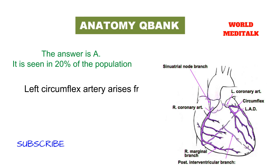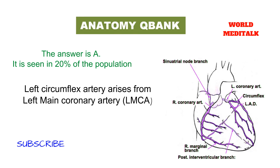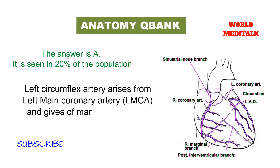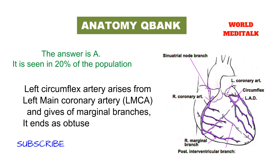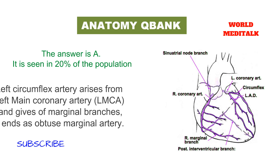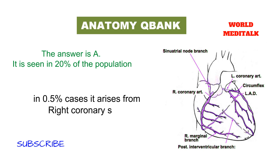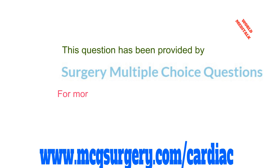The left circumflex artery arises from the left main coronary artery and gives off marginal branches, ending as the obtuse marginal artery. In 0.5 percent of cases, it arises from the right coronary sinus. This brainstorming question has been provided by Surgery Multiple Choice Questions — the link is below.